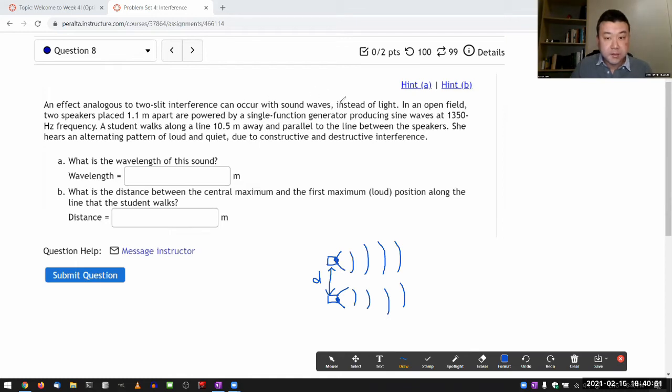And it says they're powered by a single function generator producing sine waves at some frequency. That's one thing you'd have to watch out for - they're giving you frequency instead of wavelength. And when you figure out the geometry, what matters is the wavelength. So you have to relate that to the frequency: wavelength is the speed of the wave divided by frequency. From this, you have to get the wavelength of the wave you're dealing with.